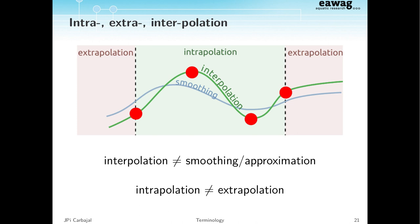Inside and outside in high-dimensional space is actually ill-defined, but on a line people believe they know what it means. To make it clear: interpolation is the opposite of smoothing or approximating, and intrapolation is the opposite of extrapolation.